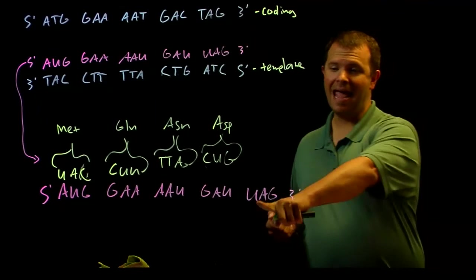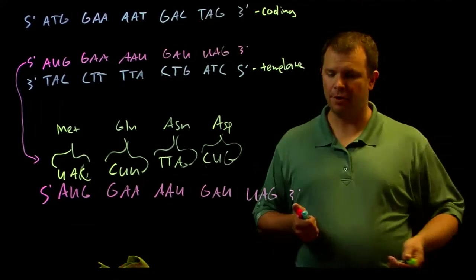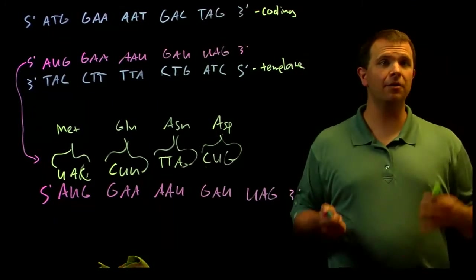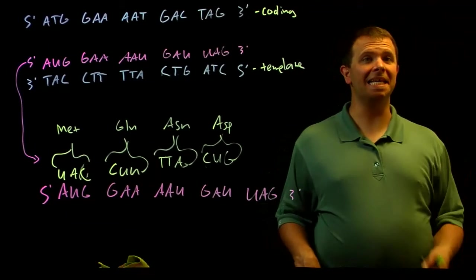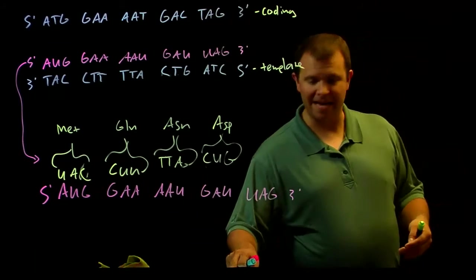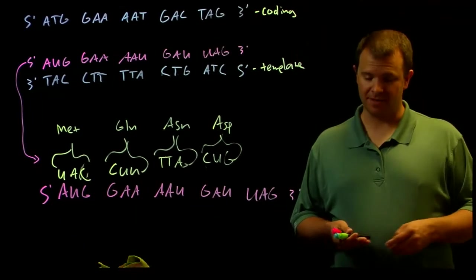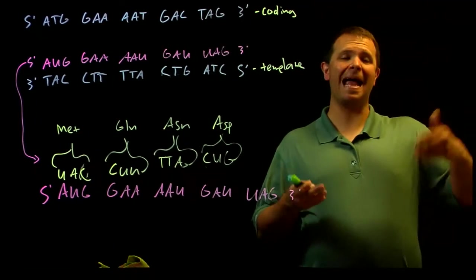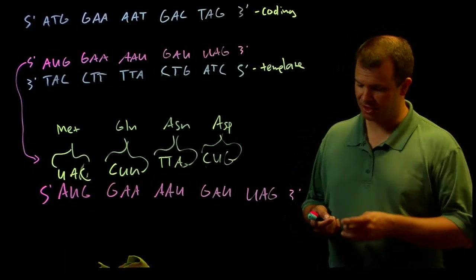Second, stop codons. U-A-G is a stop codon. Did we add an amino acid there? No. The stop codon is a signal to the ribosome that it is time to stop adding amino acids to the growing polypeptide chain.